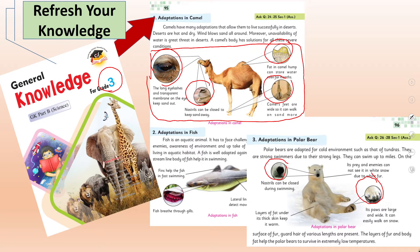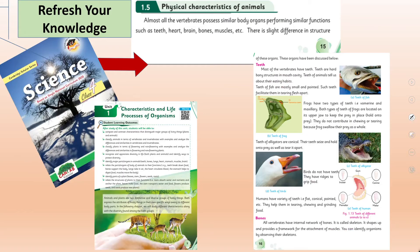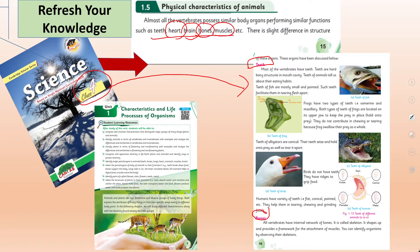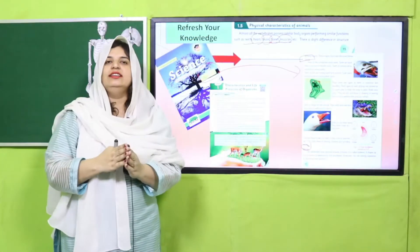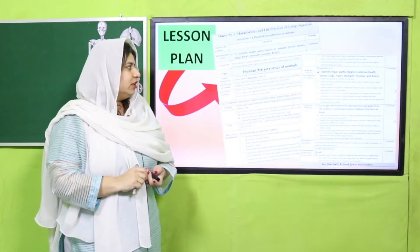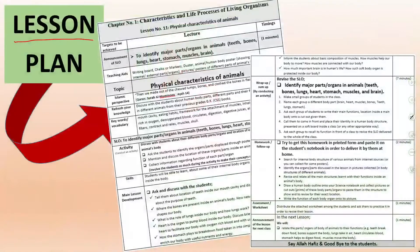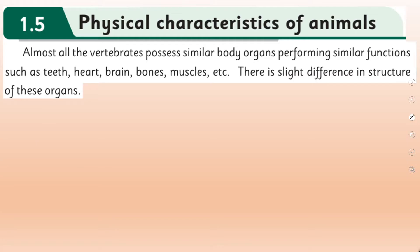Those were body organs and parts you can easily identify externally on an animal's body structure. In Grade 4, you are going to study some body organs like teeth, bones, muscles, brain, and heart. To differentiate these Grade 4 organs from previous grades, I suggest teachers conduct an activity using the lesson plan provided, which you can follow to deliver your lecture within the class. So let us start with the physical characteristics of animals.